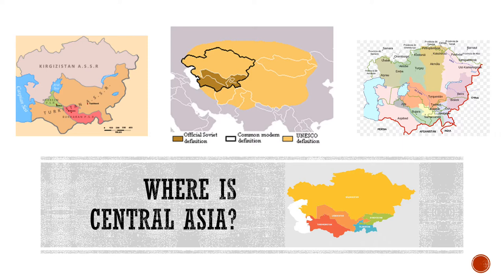The region is commonly defined as the five major Central Asian Republics: Kazakhstan, Kyrgyzstan, Tajikistan, Turkmenistan, and Uzbekistan. Although sometimes Afghanistan is also included in this grouping.